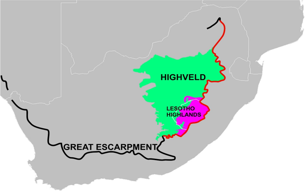The Highveld rainy season occurs in summer, with substantial afternoon thunderstorms being typical occurrences in November, December, and January. Frost occurs in winter.